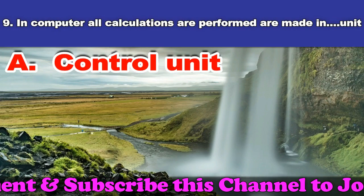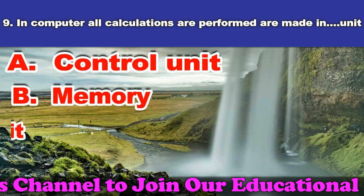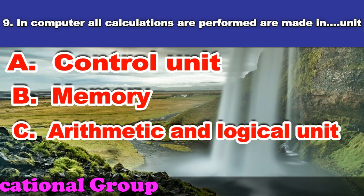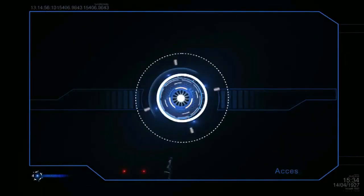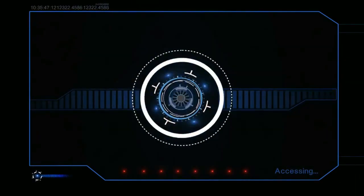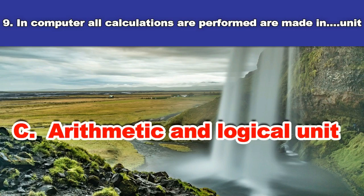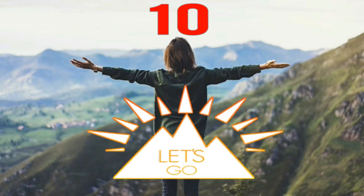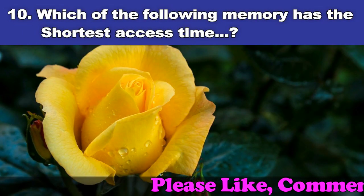Ninth question: In a computer, all calculations are performed in which unit? A. Control unit. B. Memory. C. Arithmetic and logical unit. D. Register. And the answer is arithmetic and logical unit.